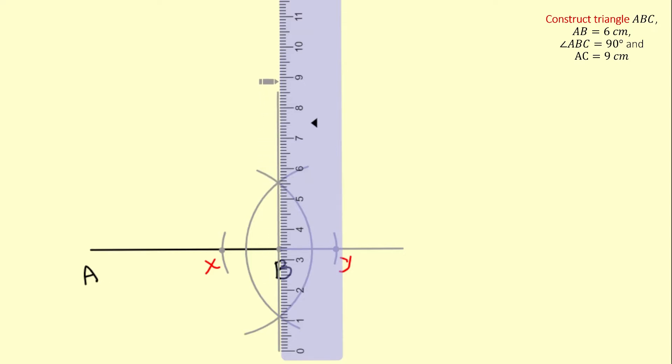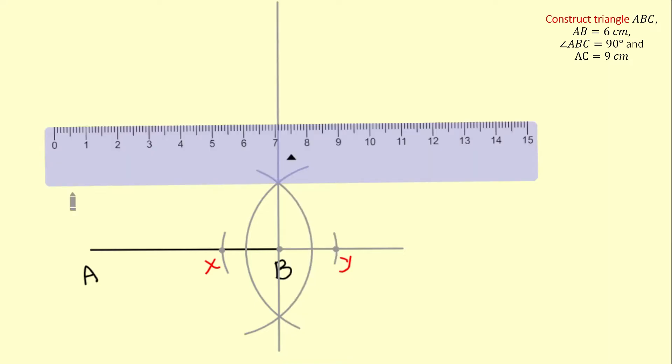Because we still don't know the length of BC yet, I'll now use my ruler to stretch my compass 9 centimeters, the length of line BC.